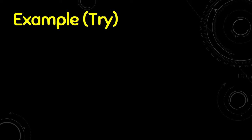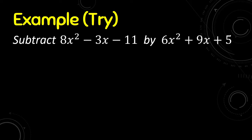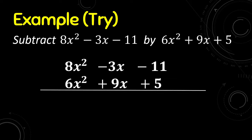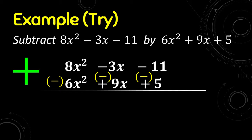Let us try this example. I will give you 5 seconds to mentally calculate: subtract 8x² minus 3x minus 11 by 6x² plus 9x plus 5. We write it vertically and change the signs of the subtrahend: 6x² becomes negative, positive 9x becomes negative, and positive 5 becomes negative. Then: 8x² plus negative 6x² is positive 2x², negative 3x plus negative 9x is negative 12x, and negative 11 plus negative 5 is negative 16. That is the difference.